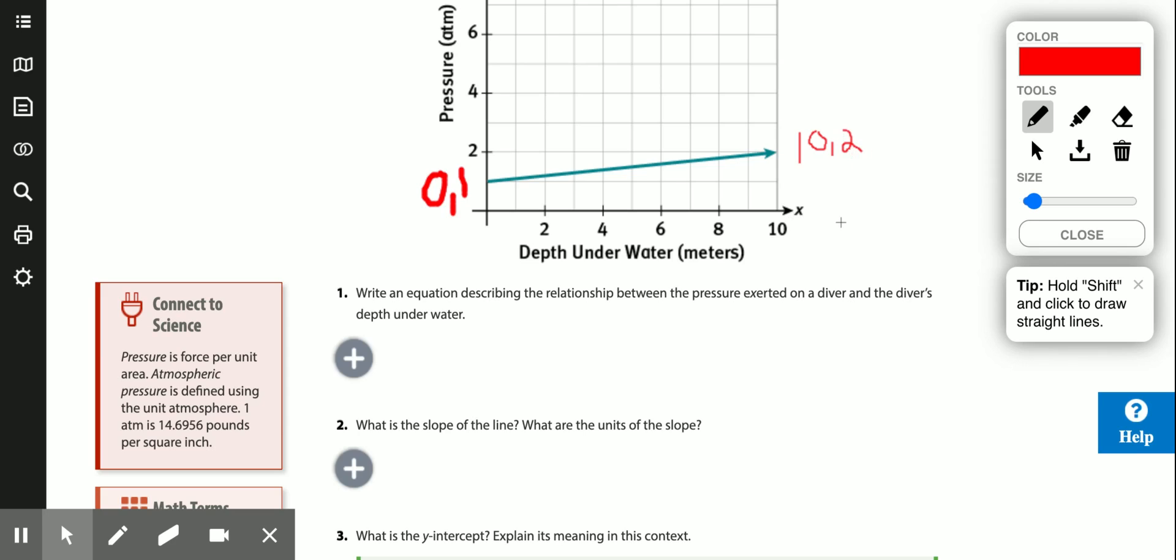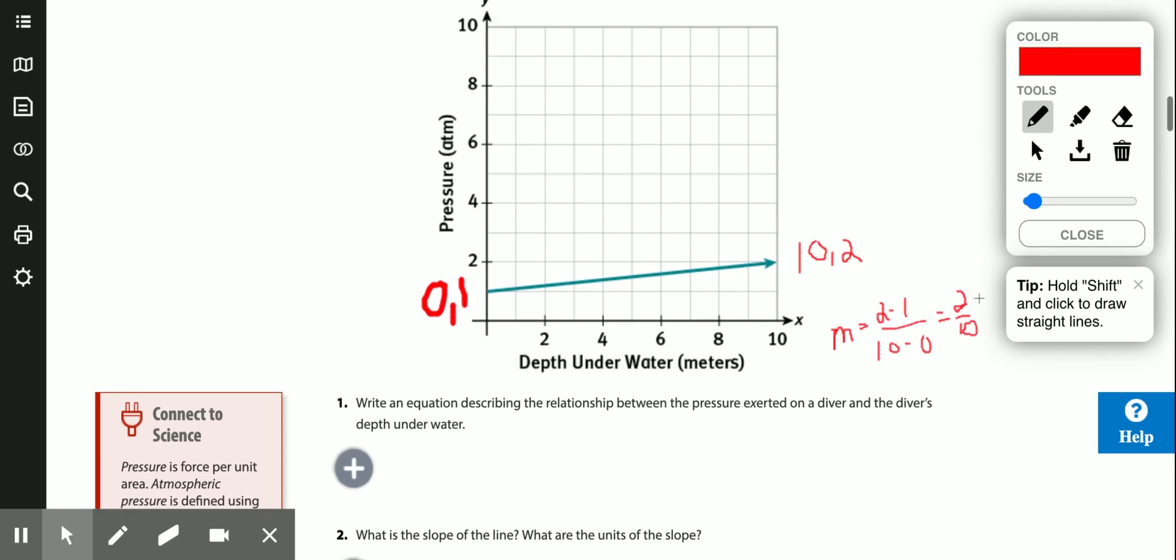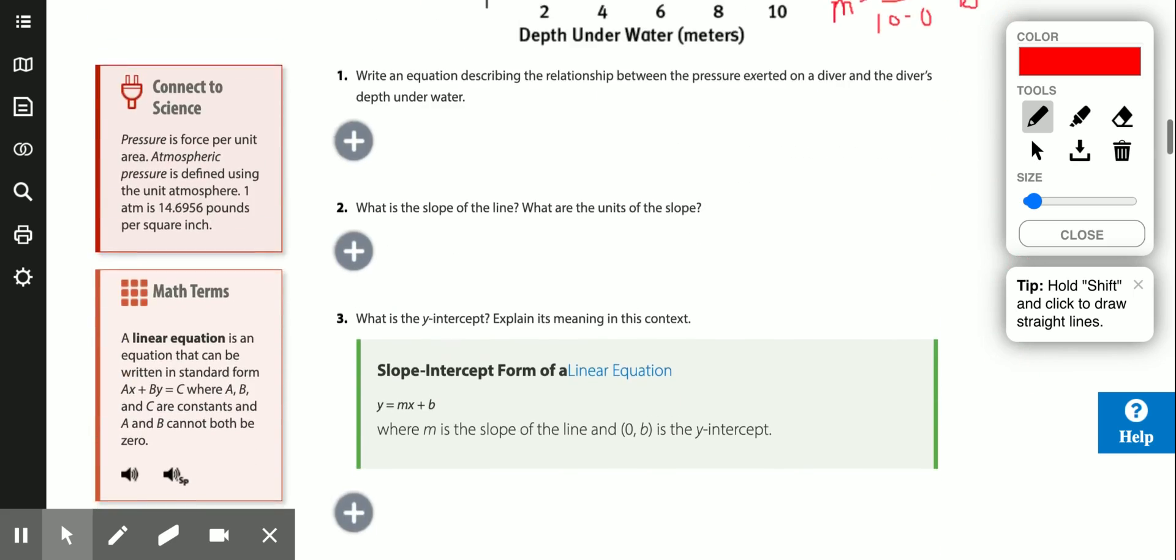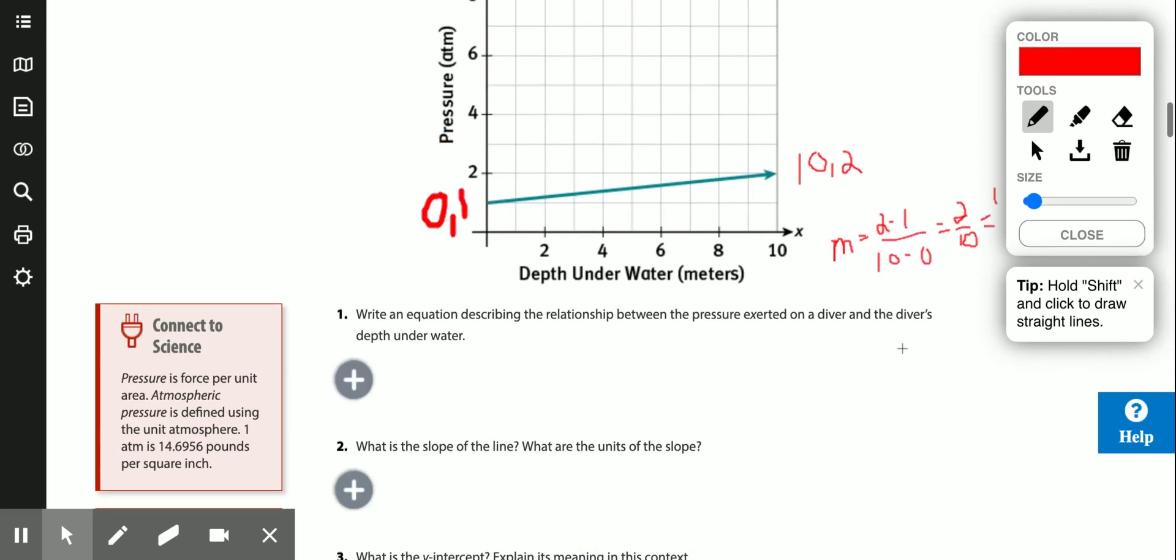So the slope is going to be 2 minus 1 over 10 minus 0, which is 2 tenths, which is 1 fifth. You can see that it's a very not steep hill. It doesn't climb very fast. And so when you have that, that's your slope.